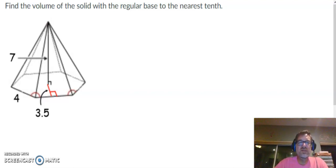To find the volume of any pyramid, we're going to use the formula volume equals one-third area of the base times the height of the pyramid.